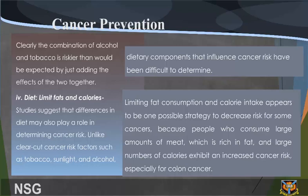4. Diet: Limit Fat and Calories. Studies suggest that differences in diet may also play a role in determining cancer risk. Unlike clear-cut cancer risk factors such as tobacco, sunlight, and alcohol, dietary components that influence cancer risk have been difficult to determine. Limiting fat consumption and calorie intake appears to be one possible strategy to decrease risk for some cancers, because people who consume large amounts of meat, which is rich in fat, and large numbers of calories exhibit an increased cancer risk, especially for colon cancer.